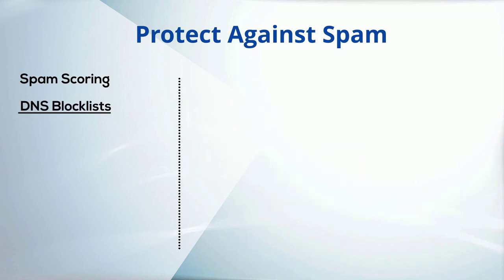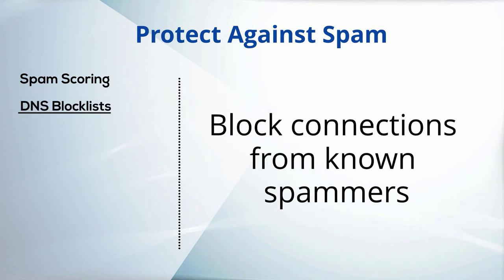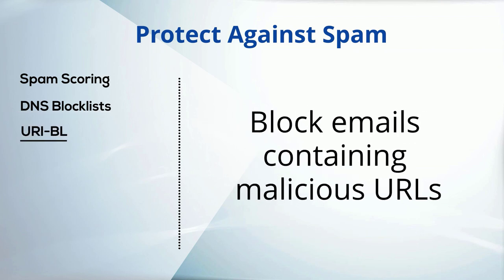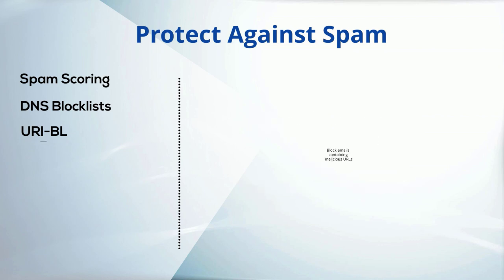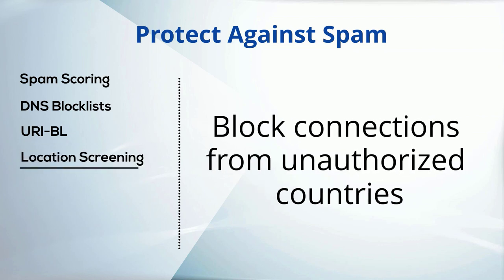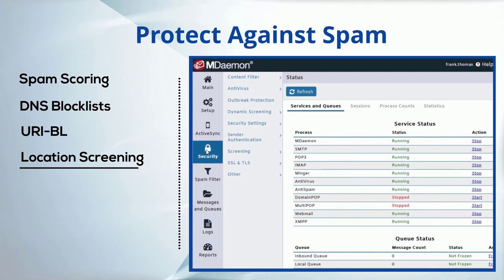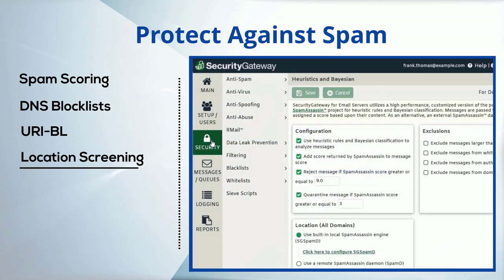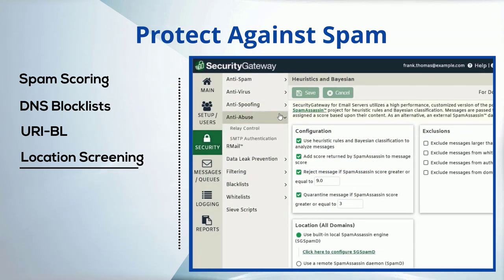Use a DNS block list service to block email from servers that are known to relay spam. There are several reputable DNS block list services available, zen.spamhouse.org for example. Use URI block lists to block email containing malicious URLs, and use Location Screening to block email from countries with which you have no legitimate business. In MDaemon Remote Administration, you'll find these settings in the Security section under the Screening menu, and in Security Gateway, you'll find them under the Anti-Abuse section.